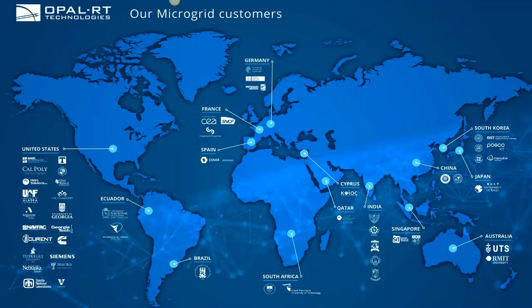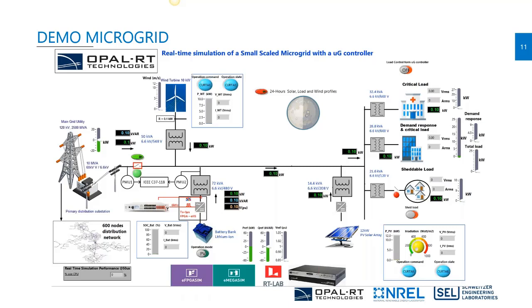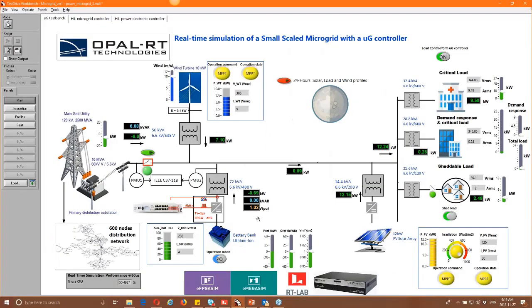OPAL-RT has customers all over the globe involved in microgrid controller testing and research. I'll now show a demo of a microgrid running on a real-time simulator that you can interact with in real time. This microgrid is part of a larger 600-node distribution network; it includes a battery energy storage system, a wind turbine, a PV array, and several different kinds of loads — all controlled by a microgrid controller.